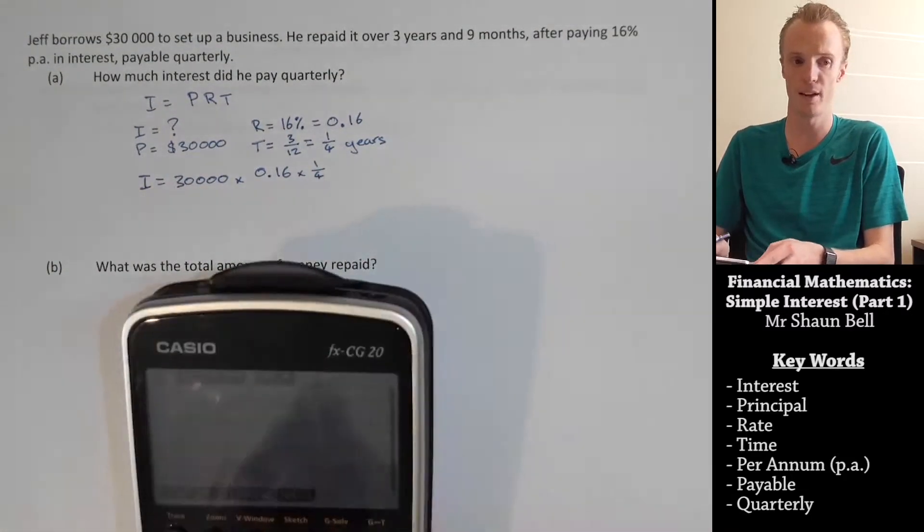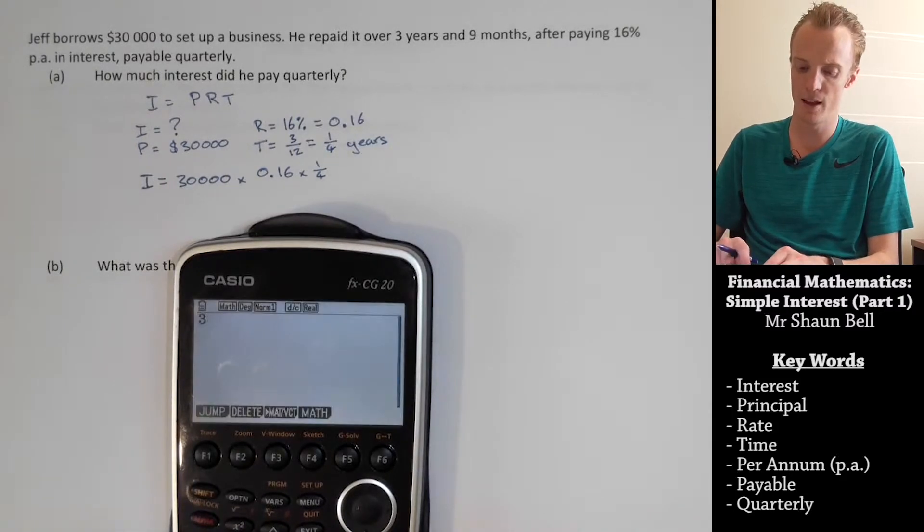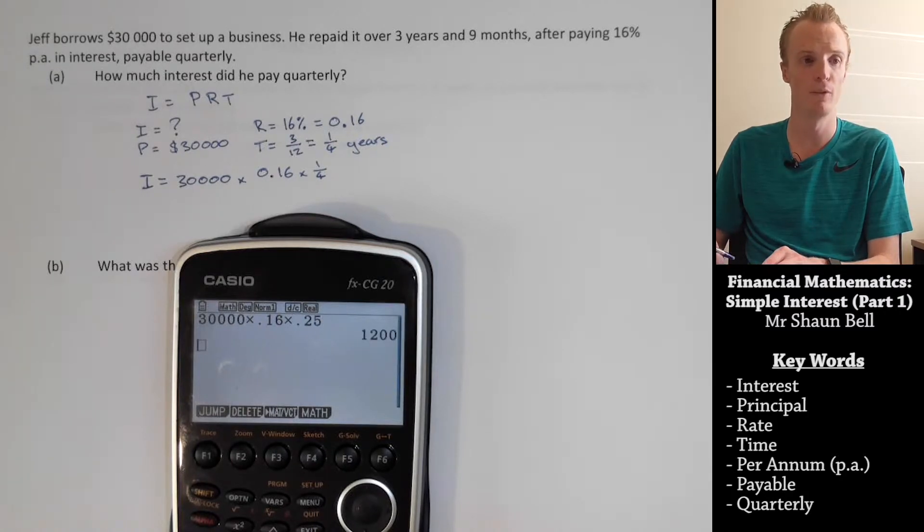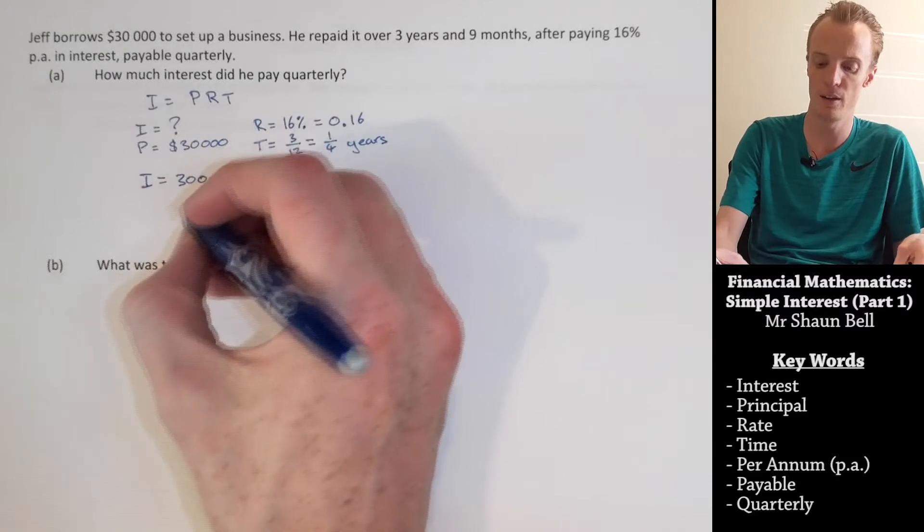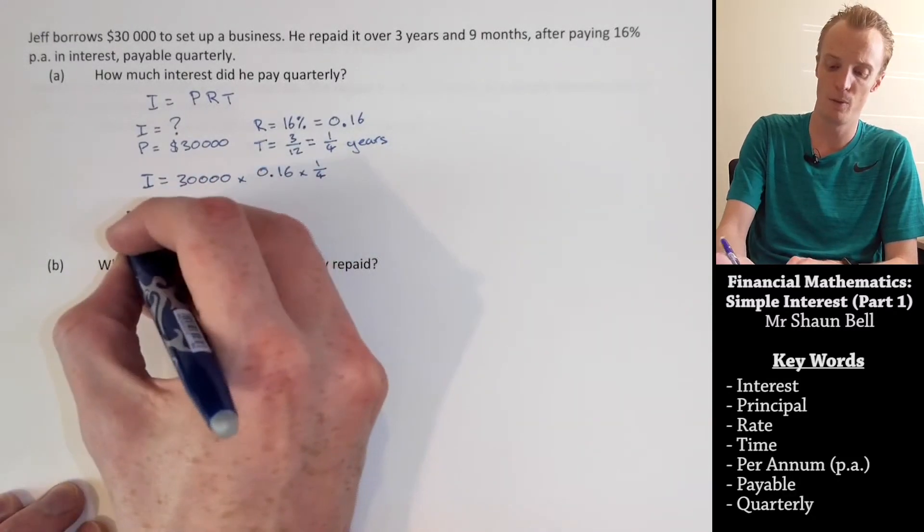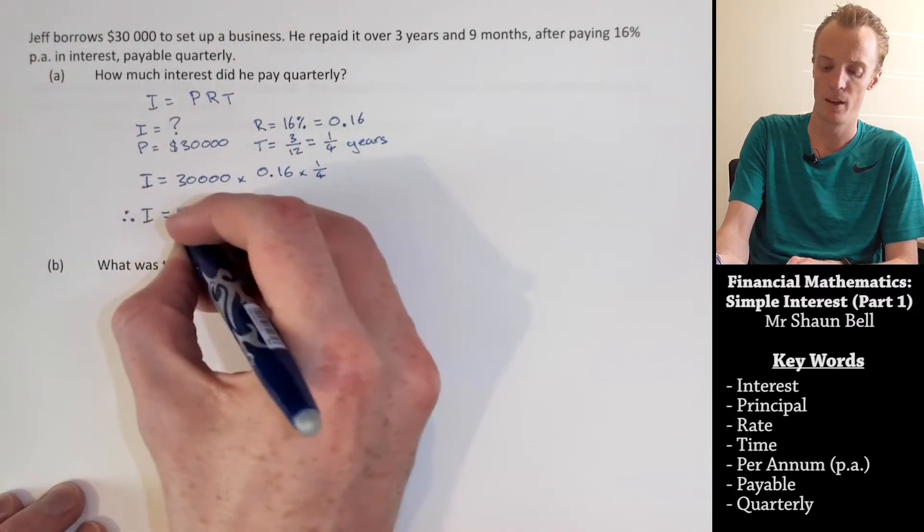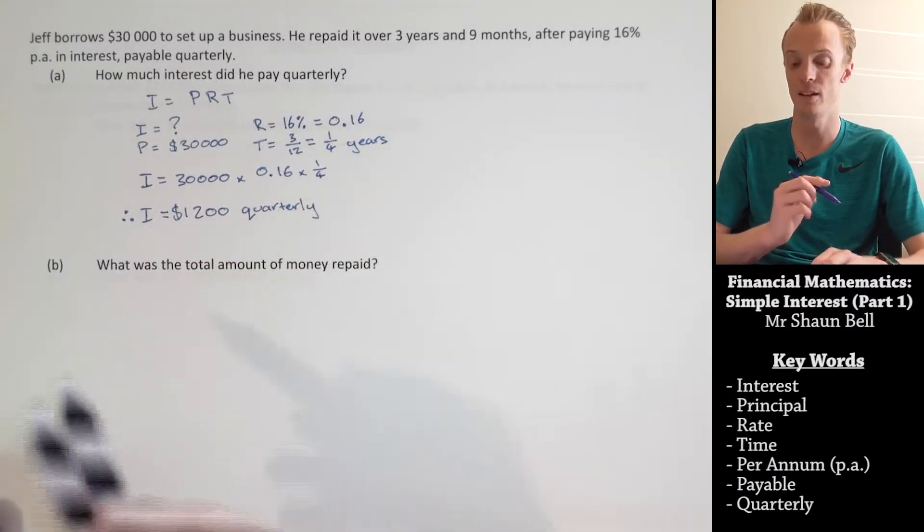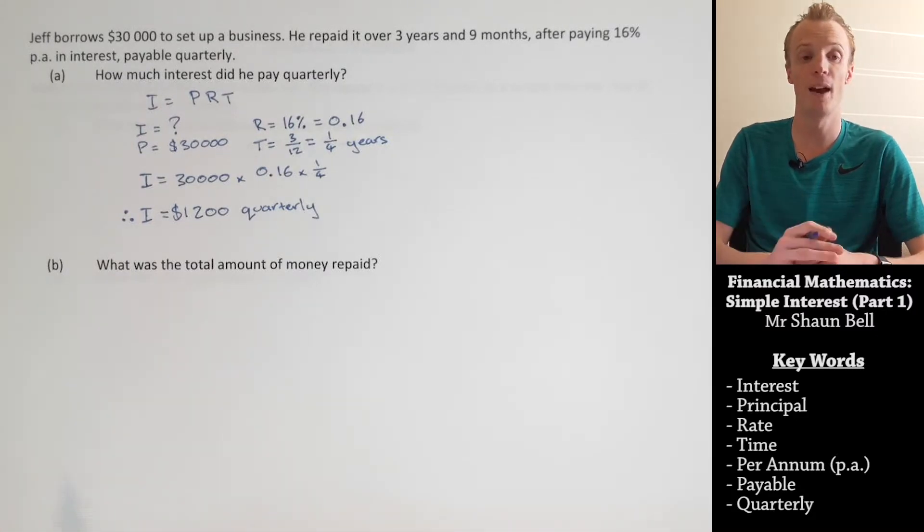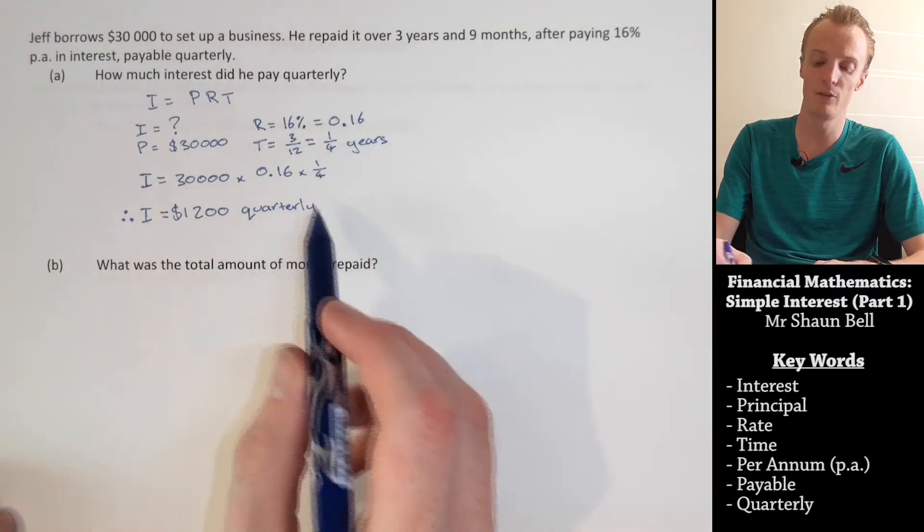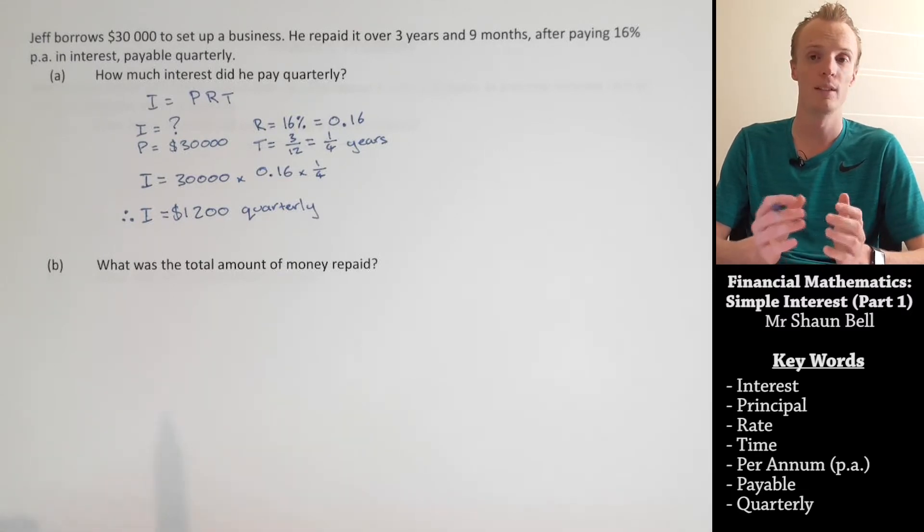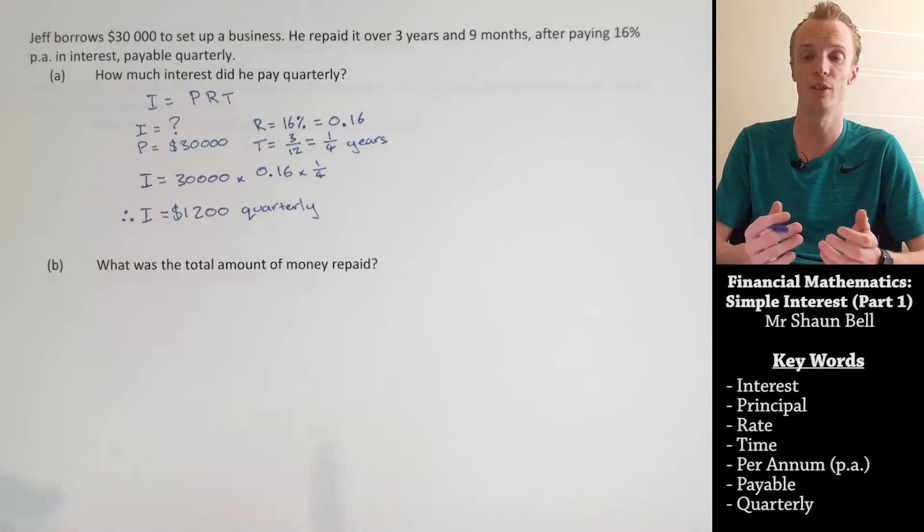Now, to solve this, we can bring in our calculator if we wish. We enter our 30,000. We multiply that by 0.16. We multiply that by a quarter, or 0.25 in decimal version. And we find that our answer is equal to 1,200. Therefore, the interest that they pay quarterly is going to be $1,200. Now, to answer the next question, what was the total amount of money that he repaid? Well, it's really important to understand that this interest amount, the $1,200, is how much interest he's accruing each and every quarter. So, that means he's accruing $1,200 interest every three months.